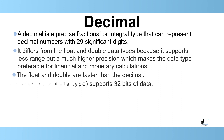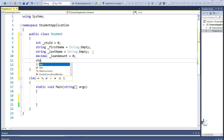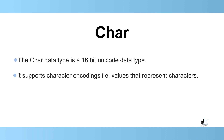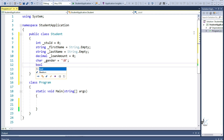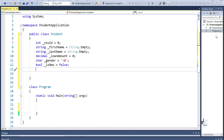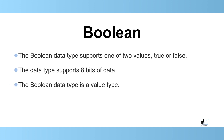The float and double are faster than the decimal. Note the float keyword is an alias for the single type in C-Sharp. The float or single data type supports 32 bits of data. The double data type supports double this amount, i.e. 64 bits of data. The decimal supports 128 bits of data. The decimal data type is a value type. Char: the char is a 16-bit Unicode data type. It supports character encodings, i.e. values that represent characters. Unicode is a computer industry standard for the consistent representation of text for most of the world's writing systems. A char is a value type. We'll initialize our char-defined variable to a null character. Boolean: a Boolean data type supports one of two values, true or false. This data type supports 8 bits of data. The Boolean data type is a value type.